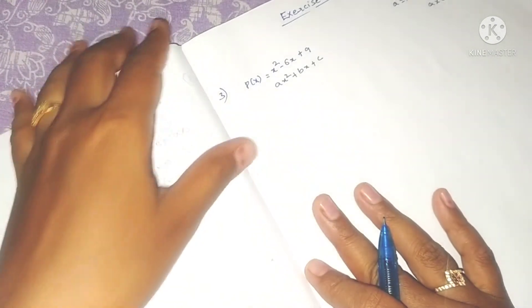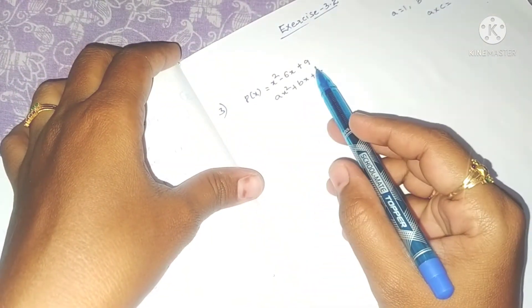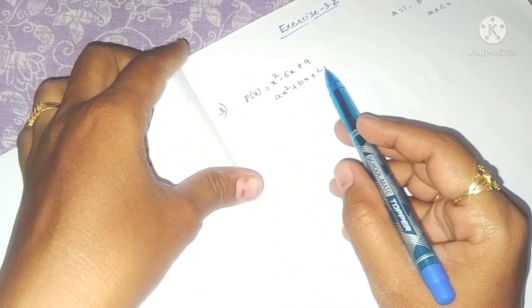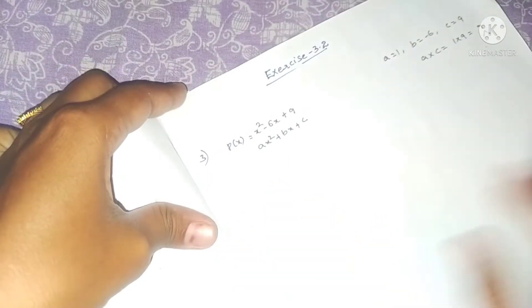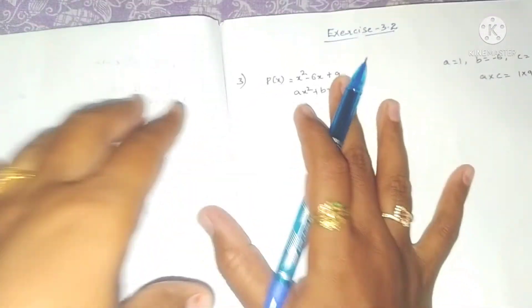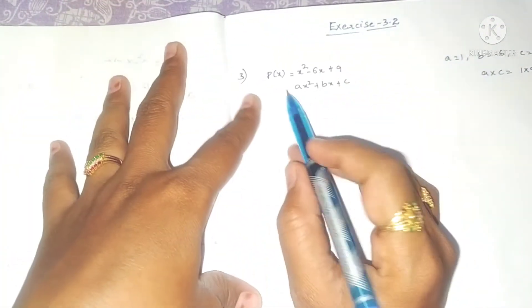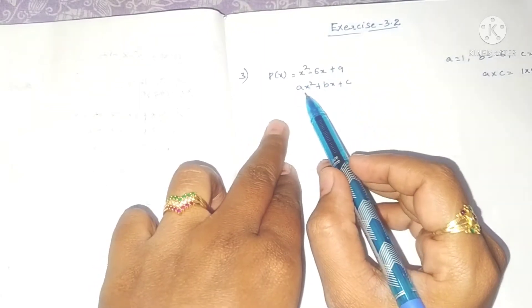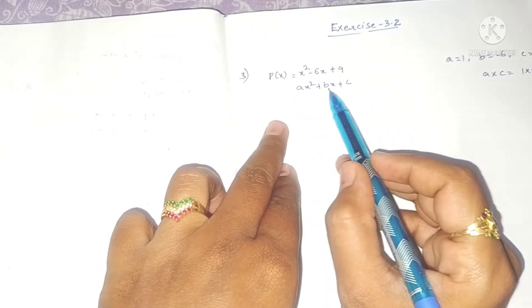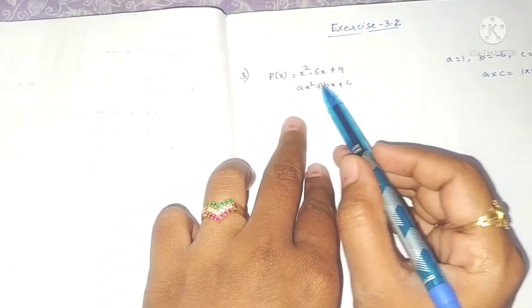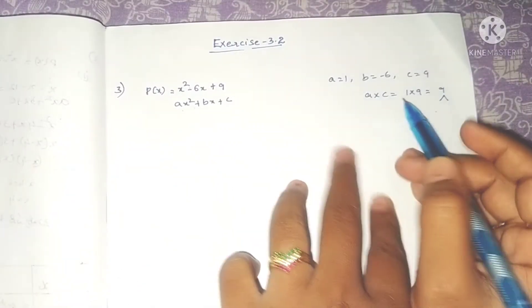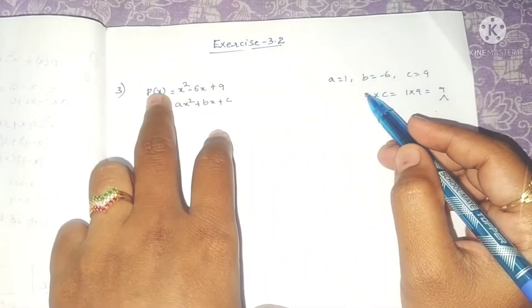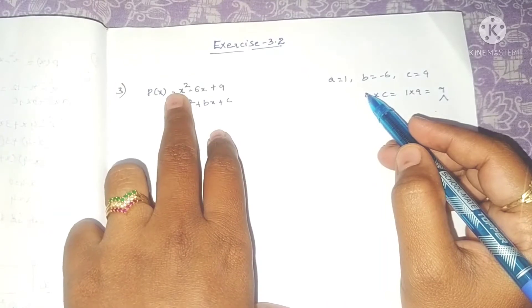The problem is: p(x) = x² - 6x + 9. First, we have a polynomial. We compare this to the standard form ax² + bx + c. So here, comparing coefficients: a is the coefficient of x², b is -6, and c is 9.